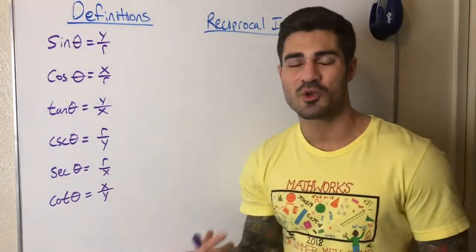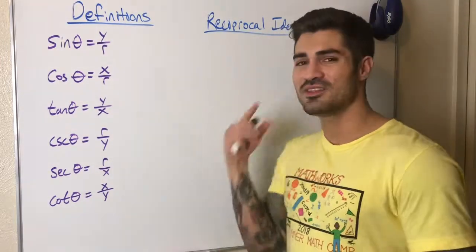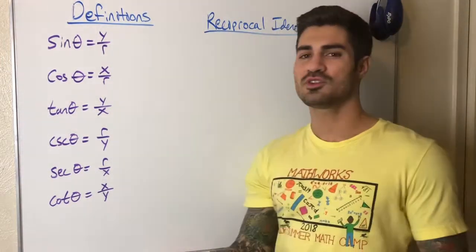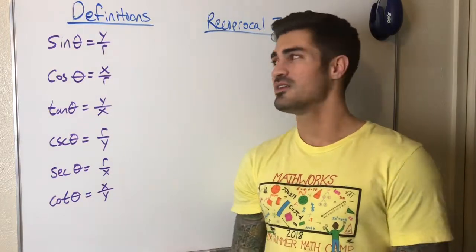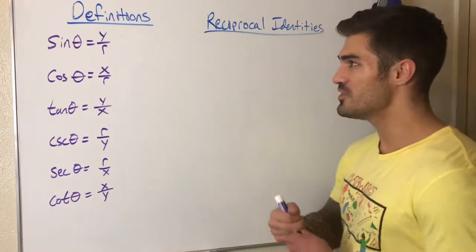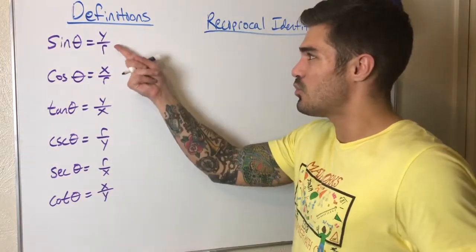And the reason this is the only identity I'm going over in this video is because I think this is the most commonly used one. It's really important to know. Of course there are Pythagorean identities, co-function, all kinds of different identities, but we're going to talk about this one because it's pretty easy to see.